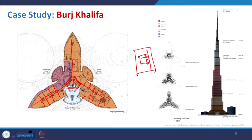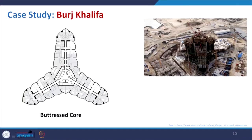Looking at the plan of Burj Khalifa: the Y-shaped plan has a hexagonal core that is very predominant and continues throughout the height, while the wings become progressively shorter in a very systematic manner, giving the building an overall conical shape. The shear walls and this core facilitate a better view for all the hotel and residential areas — this Y-shaped structure is called a buttressed core. In the under-construction photograph you can see the core being built while the wings are under construction.